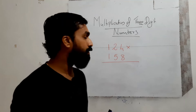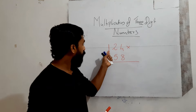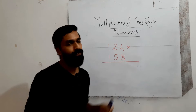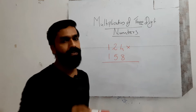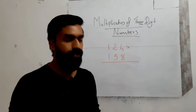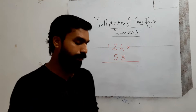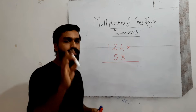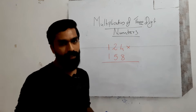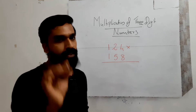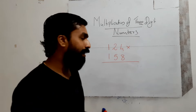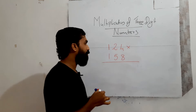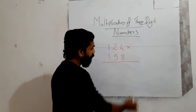Let's go to the first question. Here I have written 124 into 158 — we have to find the value of this product. So 124 and 158 are three-digit numbers. Listen carefully.